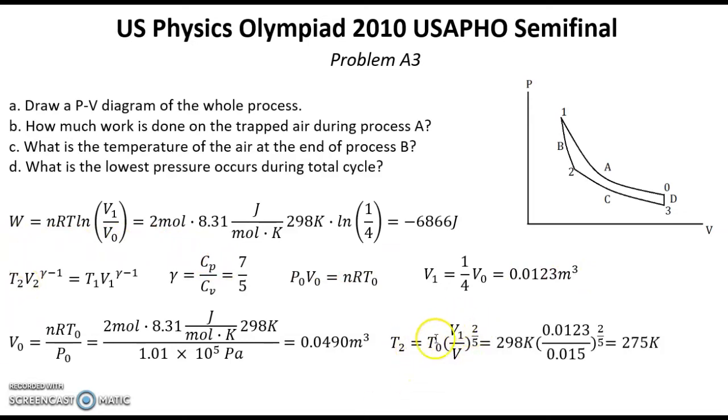After that we can count temperature T2 using the adiabatic relation. Here we already know T0, V1, and V2. We can put in numbers, and finally temperature in point 2 equals 275 Kelvin. That was the answer for question C.